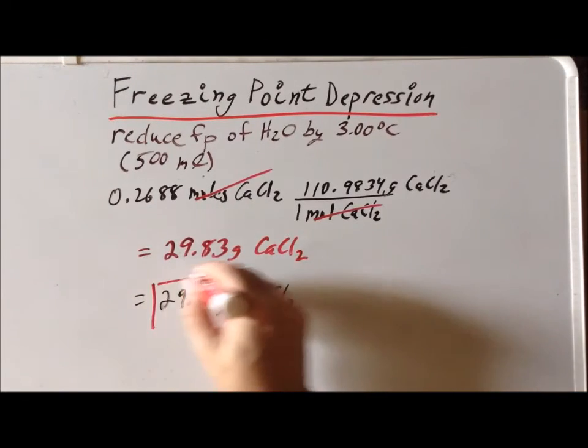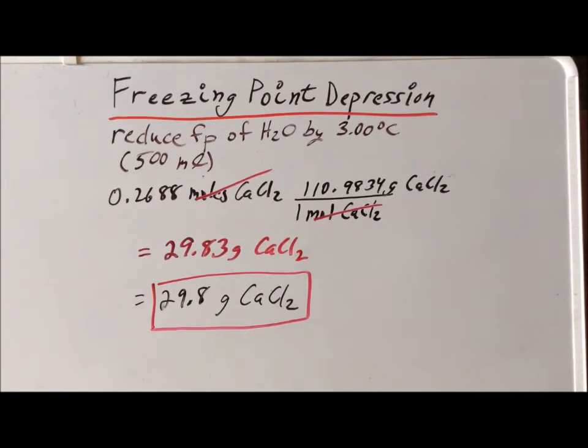So to summarize, what does this mean? It means that if we start with a solution of water that is pure, that has a volume of 500 milliliters, if we were to weigh out 29.8 grams of calcium chloride, dissolve that mass of calcium chloride in the 500 milliliters of water, and then measure the freezing point of that solution, we would find that the freezing point of that solution, rather than being the zero degrees centigrade of pure water, would have dropped to minus three degrees centigrade.